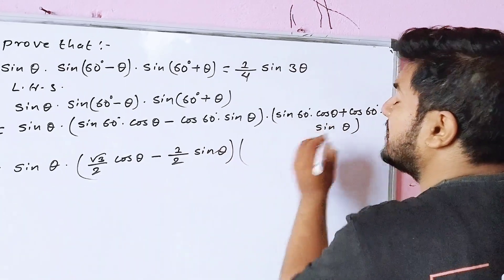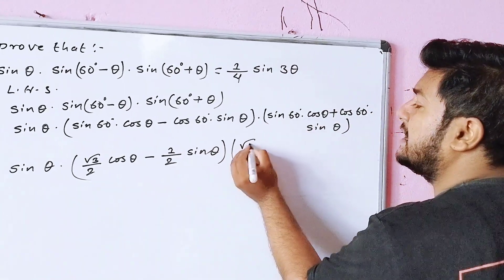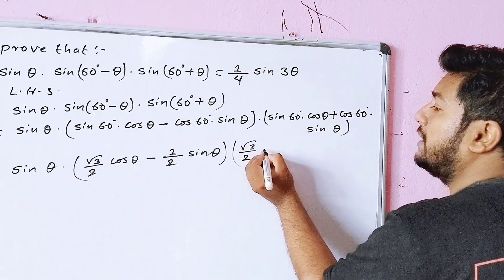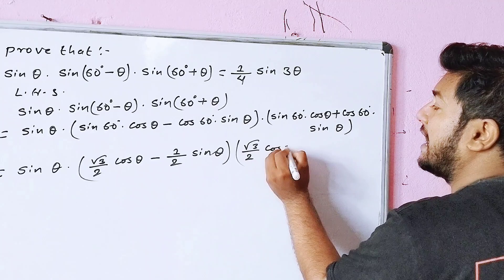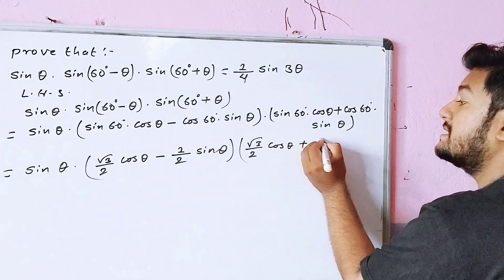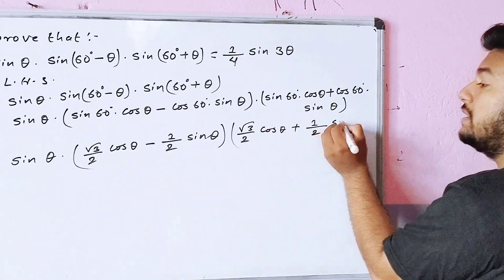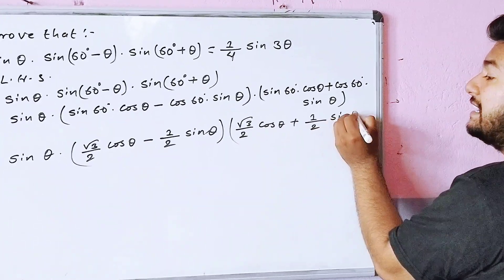Substituting: sin 60 degrees equals root 3 by 2 into cos theta, plus cos 60 degrees, the value 1 by 2, into sin theta.